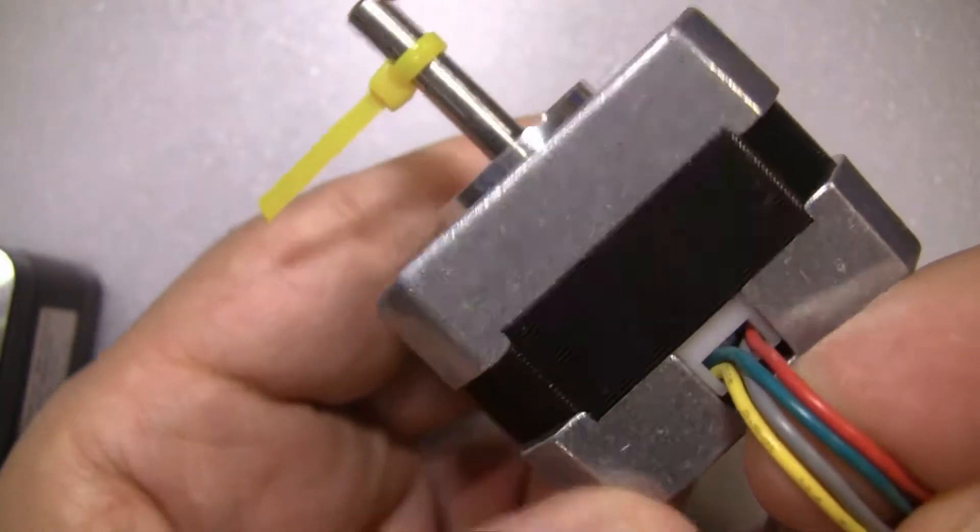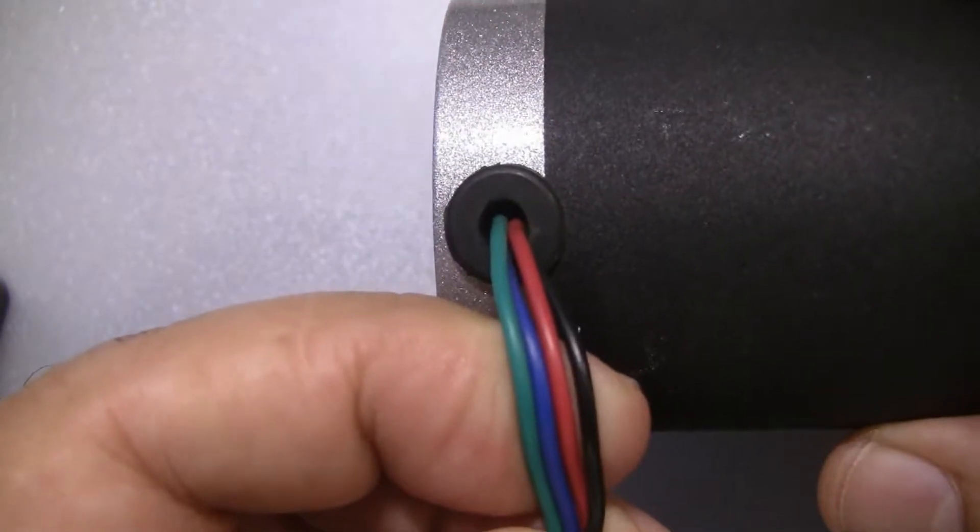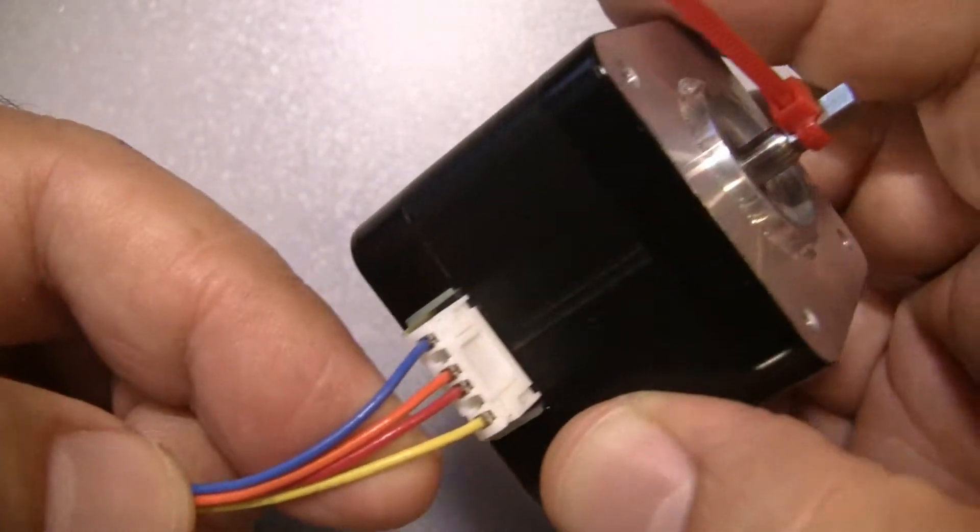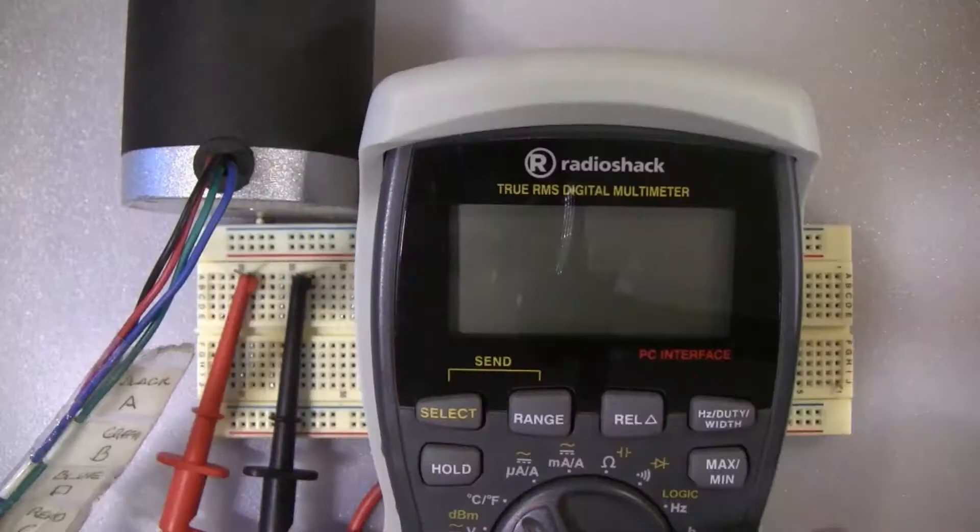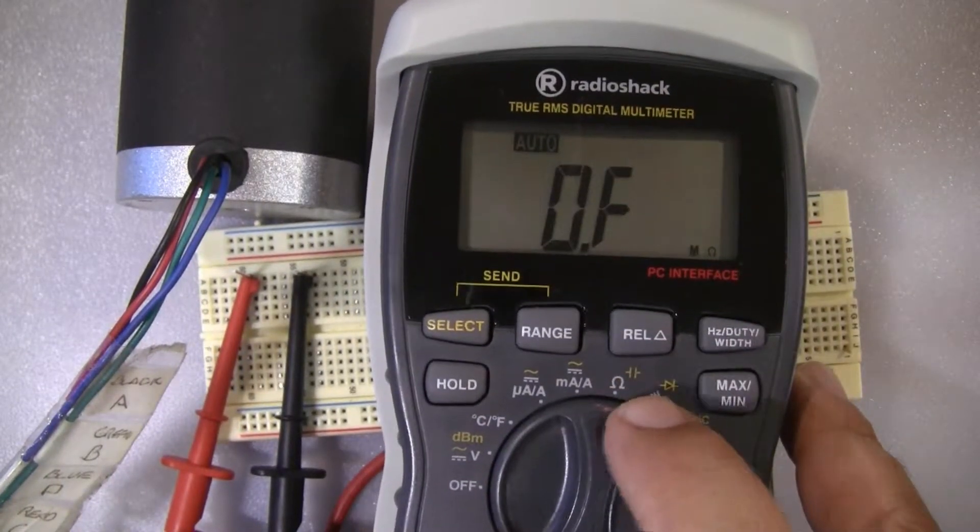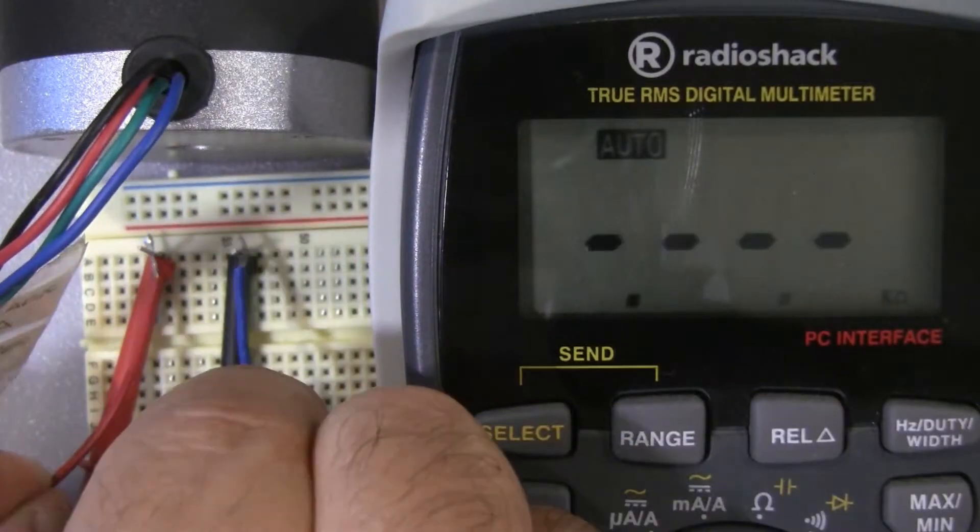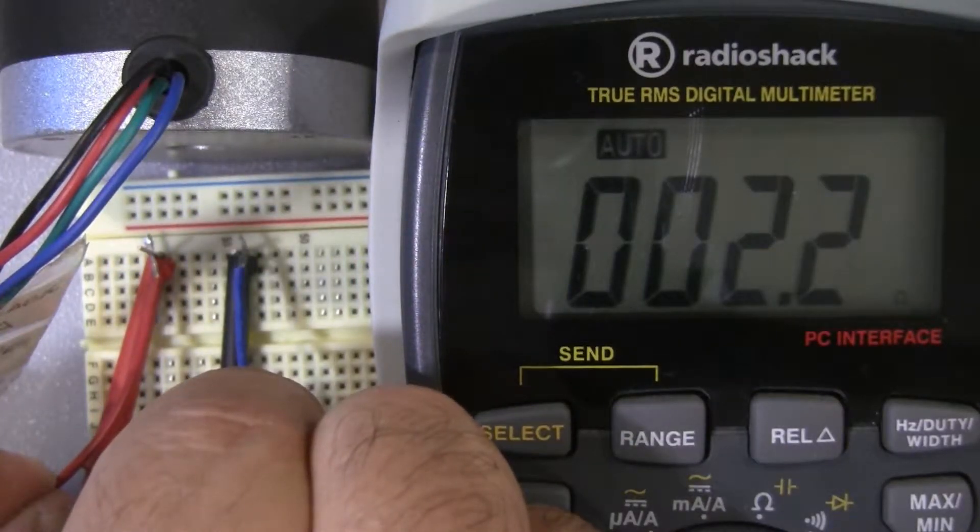You can recognize a bipolar stepper motor because it has four wires which must be connected in pairs. To know which cable goes together, you must use a multimeter to measure ohms. Take two wires and test ohms. If it's a pair, you get some reading.